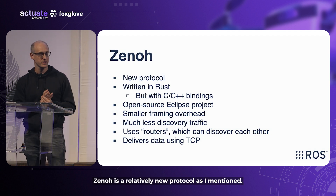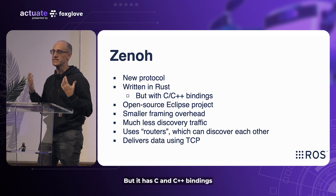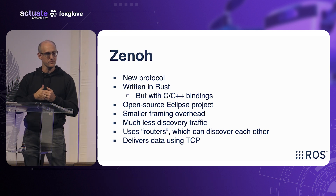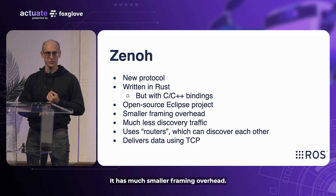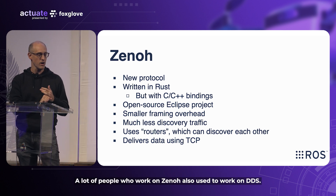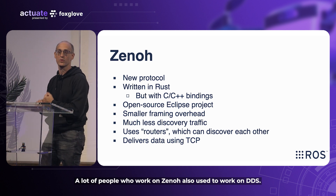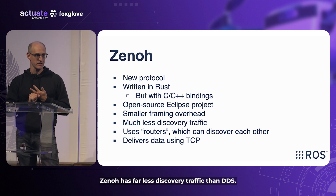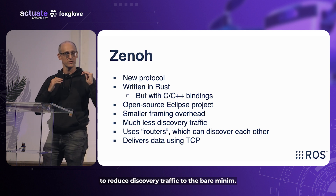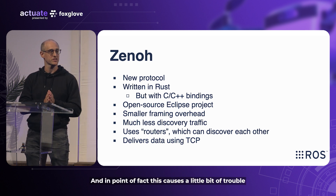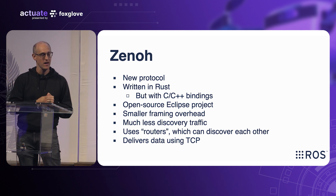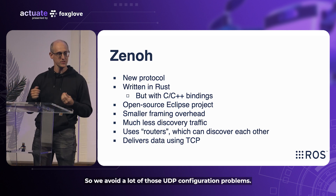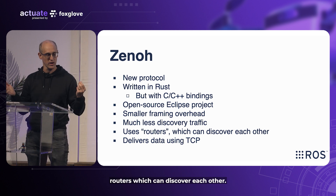Zenoh is a relatively new protocol. The core protocol is written in Rust, but it has C and C++ bindings. It's an open-source Eclipse project, largely developed by a company called ZettaScale. Some of the good things about Zenoh: it has much smaller framing overhead — many of the people who work on Zenoh also used to work on DDS, so they know the problems with it. Zenoh has far less discovery traffic than DDS, and in fact goes out of its way to reduce discovery traffic to the bare minimum. Zenoh delivers data using TCP by default, so we avoid a lot of those UDP configuration problems. And it uses routers which can discover each other.